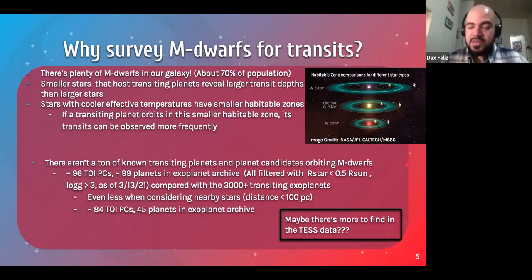And finally, there aren't a ton of known transiting exoplanets orbiting M dwarfs. To date, there's over 3000 plus transiting exoplanets that have been discovered. But out of the TESS object of interest catalog or TOI, there's only about 96 of them that are planet candidates. And in the whole exoplanet archive is about 99 of them in total. And when we start to consider the M dwarfs that are nearby, meaning within 100 parsecs, there's even less of them. So there's about 84 in the TOI catalog and 45 in the exoplanet catalog. So I thought it'd be really cool to see if there's even more planet candidates that we could find in TESS data.